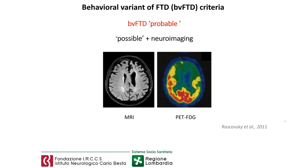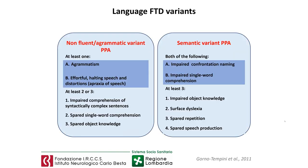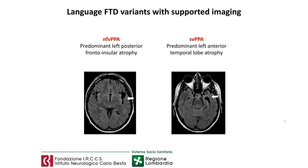We can diagnose a possible or probable behavioral variant of FTD. The diagnosis becomes probable when neuroimaging confirms atrophy in frontal regions, as shown by MRI and FDG-PET demonstrating impairment of frontal and anterior regions of the brain. The diagnosis becomes definite when we can show histopathological characteristics of this pathology — the accumulation of tau or TDP-43 in neurons, or the presence of a pathogenic mutation. The two language variants are the non-fluent/agrammatic variant and the semantic variant of PPA.